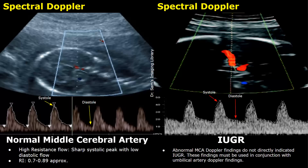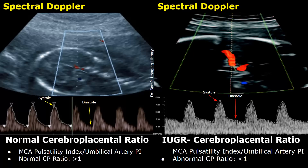One important point is that abnormal MCA Doppler findings do not directly indicate IUGR — we need to compare these findings with the umbilical artery findings. The cerebro-placental ratio is the ratio between MCA pulsatility index and umbilical artery pulsatility index, helping to compare the two. The normal CP ratio should be greater than 1; an abnormal CP ratio is less than 1.